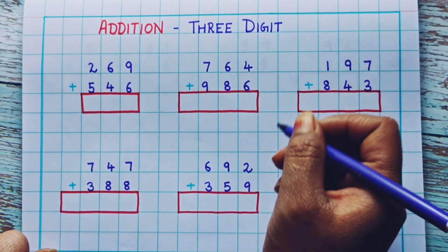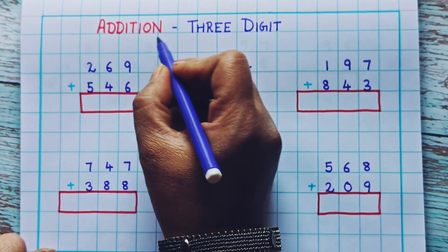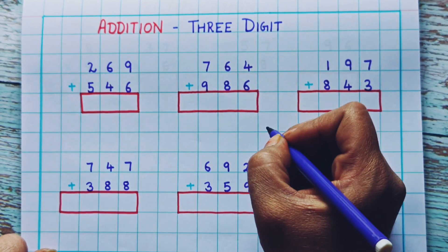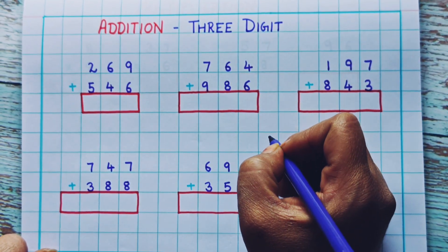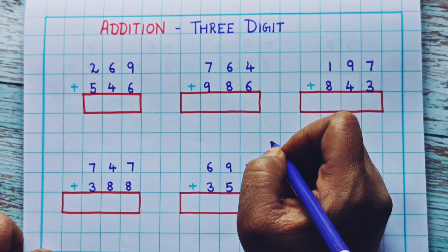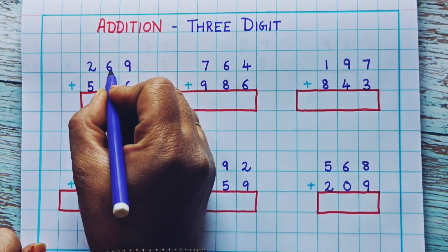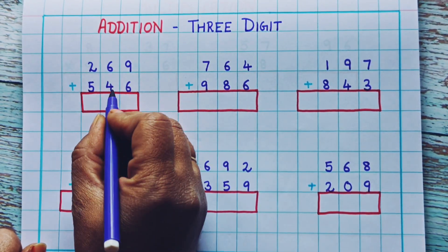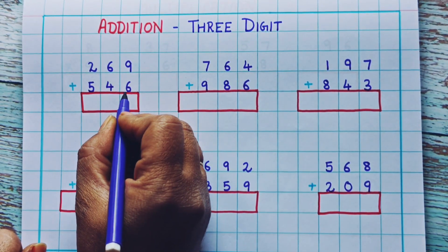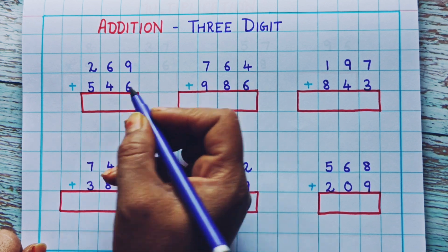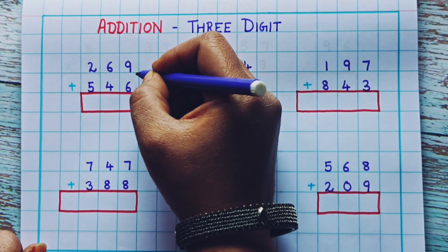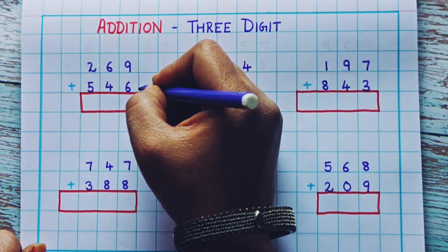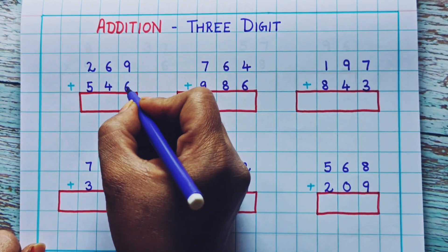Hi everyone, welcome back! Today we are going to learn the addition of three-digit numbers with carryover. Let's begin: 269 plus 546. Now we know that addition will always begin from the ones place, then we will move towards the tens place, and then the hundreds, and so on.